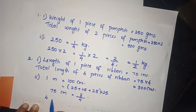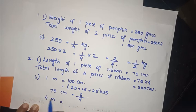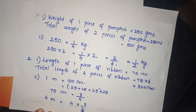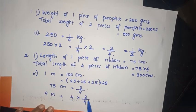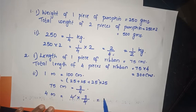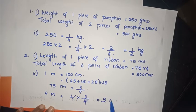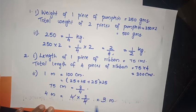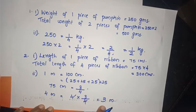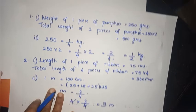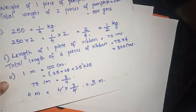So 4 meters is equal to 3/4. Cancel the numbers, so we get 3 meters. The second question is solved. Now the third one: one cup can hold 1/3 liters of milk.